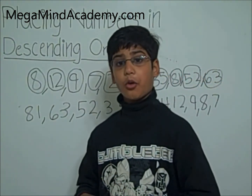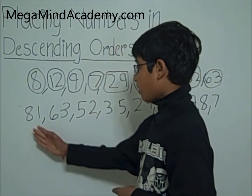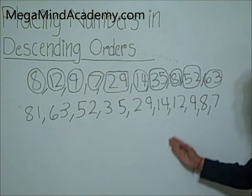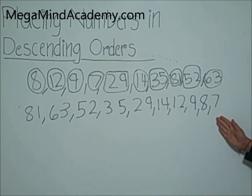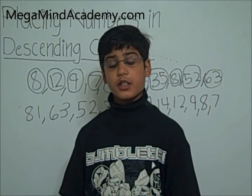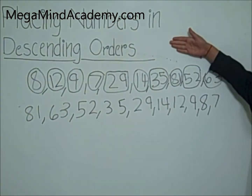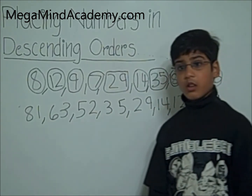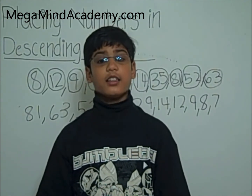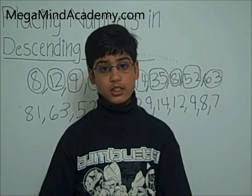Now the numbers in descending order are: 81, 63, 52, 35, 29, 14, 12, 9, 8, and 7. Today we learned about placing numbers in descending order. To place numbers in descending order, you start placing the largest number first, then you gradually go on placing the smaller numbers till you place the smallest number last.